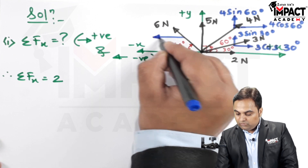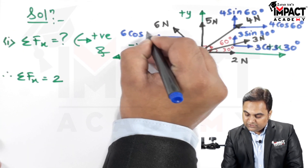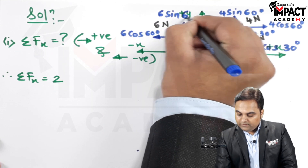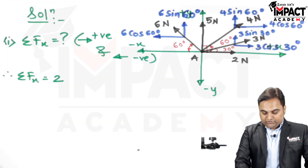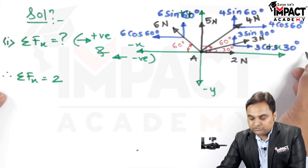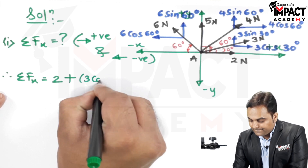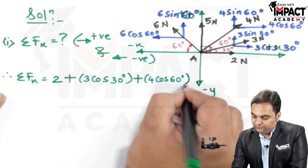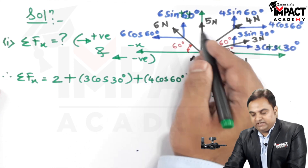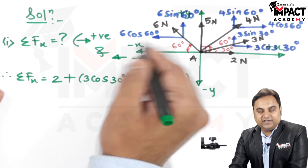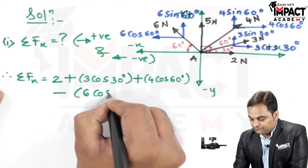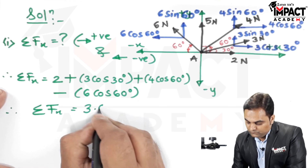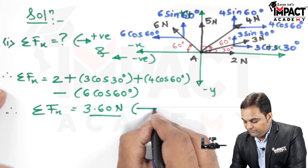The 6 newton force at 60 degrees with respect to the horizontal gives a horizontal component of 6 cos 60 and a vertical component of 6 sin 60. Writing them all: 2 newton plus 3 cos 30 (rightward, positive), plus 4 cos 60 (rightward, positive), 5 newton is purely vertical so not included, and minus 6 cos 60 (acting towards left, negative). Adding up all the values gives summation Fx equal to 3.60 newton, positive, so the total effect is towards the right.